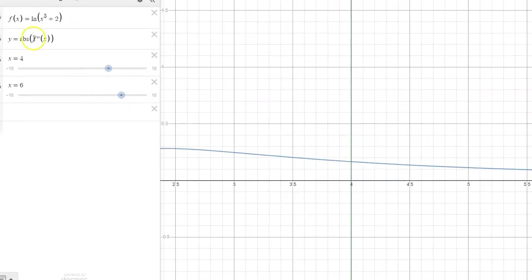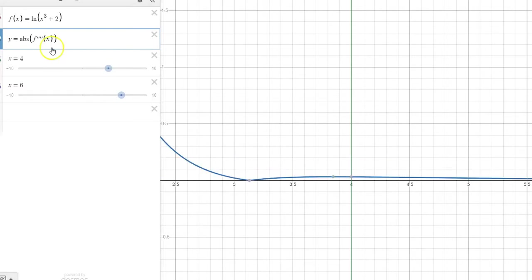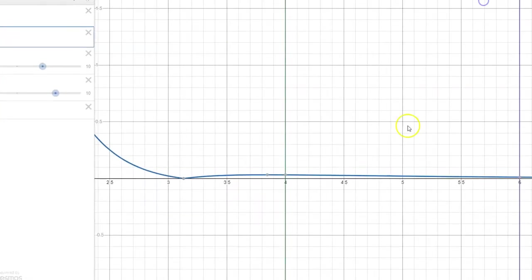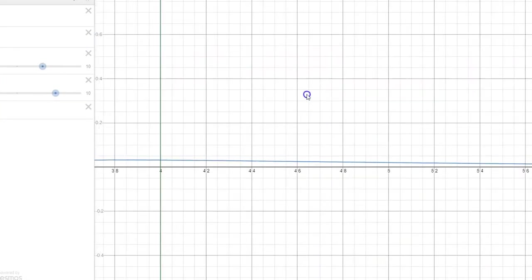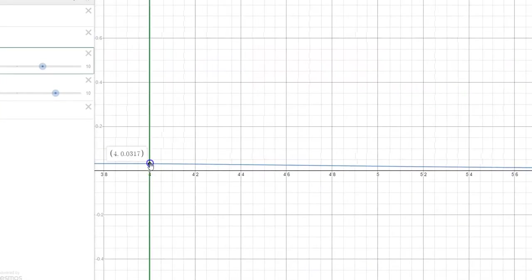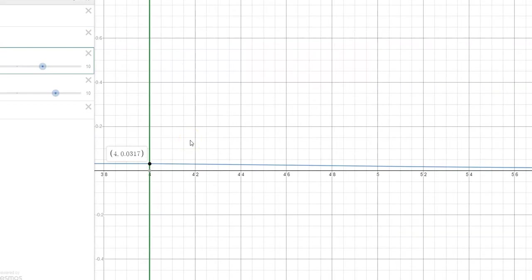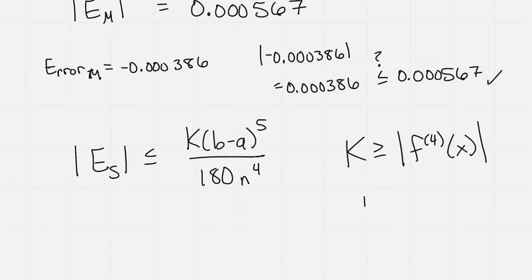But if we go to the Desmos graph that I was at before, but now I want to look at the fourth derivative. So I have everything set up, my natural log of x cubed plus 2. But now I'm going to also graph the same method, but I'm going to put fourth derivative and look at my interval of 4 to 6. Zoom in on that. And I notice the max is occurring here at 4, and that's 0.0317.